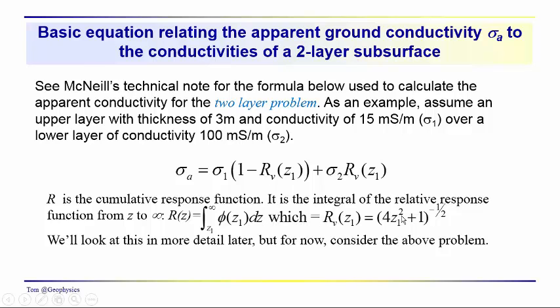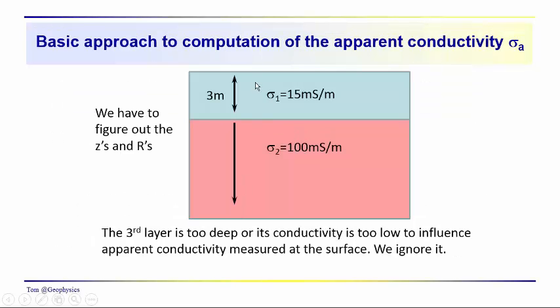R is easily calculated as one over four z1 squared plus one. So given your z's, you can easily calculate R. We're just jumping into the computation. We'll come back to the calculations of R and so on later on, but this is the kind of problem that we're talking about.